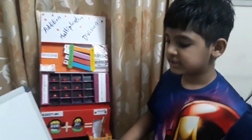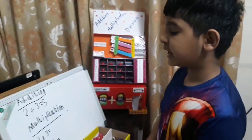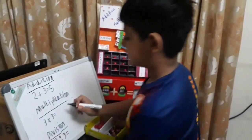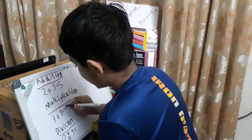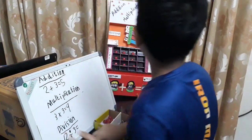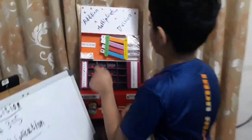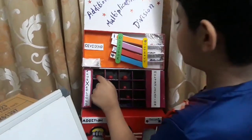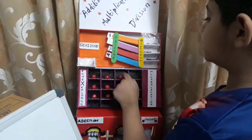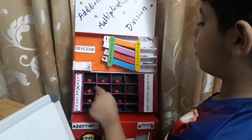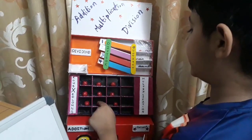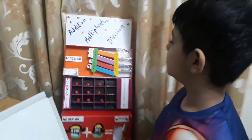So it is 3 times 3 and the answer is 9. Let me check: 1, 2, 3, 4, 5, 6, 7, 8, 9.